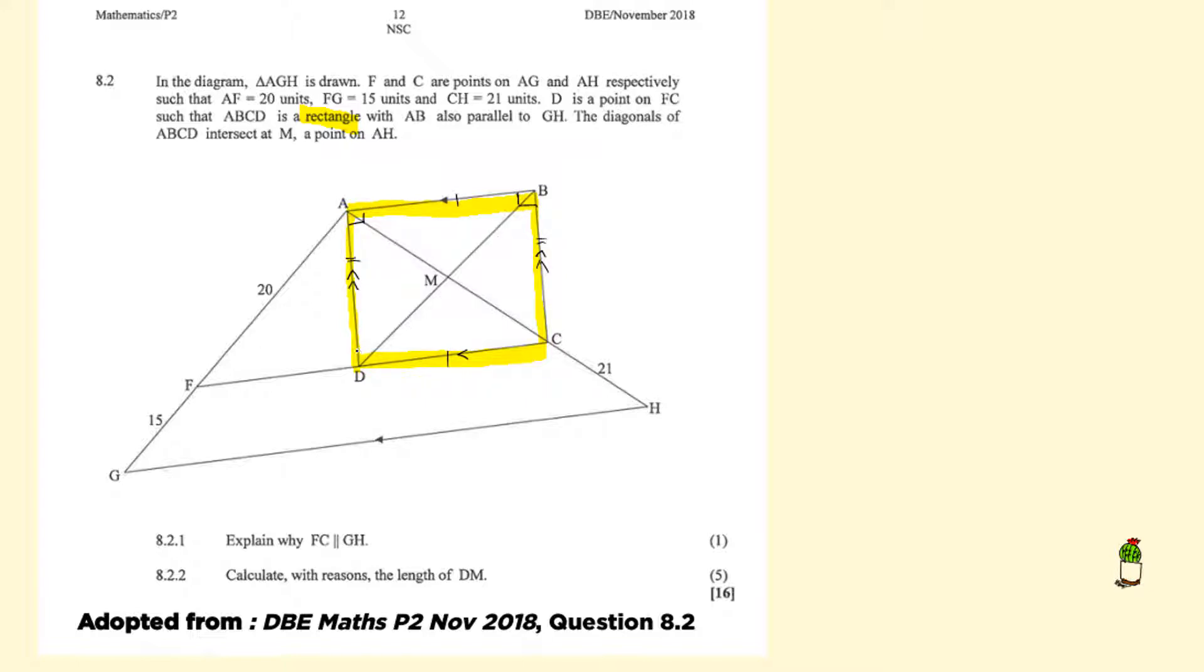And the interior angles of a rectangle are 90 degrees. So all the interior angles of a rectangle are 90 degrees. So now, if AB is parallel to GH, and AB is parallel to DC, then therefore, FC is parallel to GH.